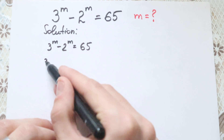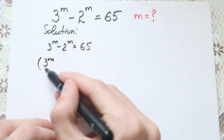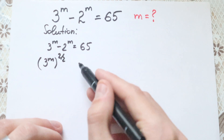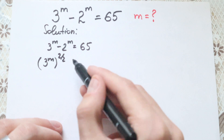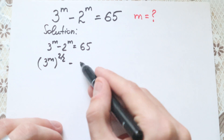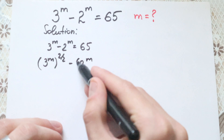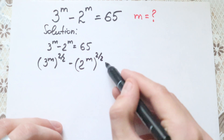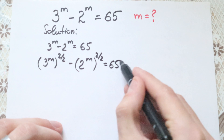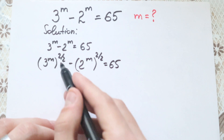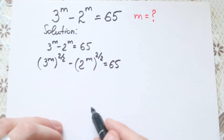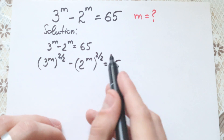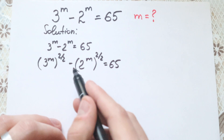First I write 3 to the power m and rewrite it as 3 to the power m raised to the power 2 over 2. This is the main trick. Minus, I do the same thing with 2 to the power m, raised to the power 2 over 2, equal to 65. We just raise to the power 2 over 2, which equals 1, so nothing changes.